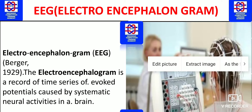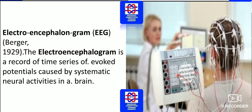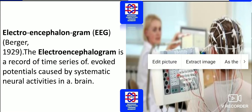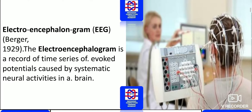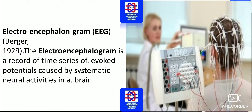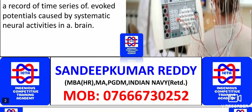Here, EEG — we are aware that EEG stands for electroencephalogram. This was found in 1929 by Berger. An electroencephalogram is a record of time series of evoked potentials caused by systematic neural activities in the brain. Overall, this EEG report is taken for the proper functioning of the brain. As you can see to the right of this figure, how exactly this EEG test is done.